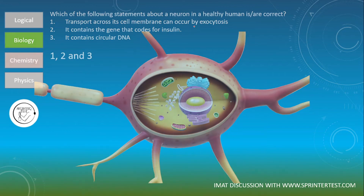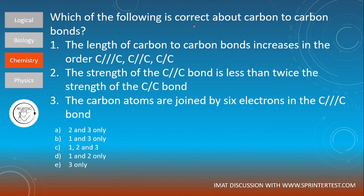Let's move to the third question of the day: which of the following is correct about carbon-to-carbon bonds? One: the length of carbon-to-carbon bonds increases in the order triple bond, double bond, single bond. Two: the strength of the carbon-to-carbon double bond is less than twice the strength of the carbon-to-carbon single bond. Three: the carbon atoms are joined by six electrons in the carbon-to-carbon triple bond. Answers: A — two and three only, B — one and three only, C — one, two and three, D — one and two only, E — three only.